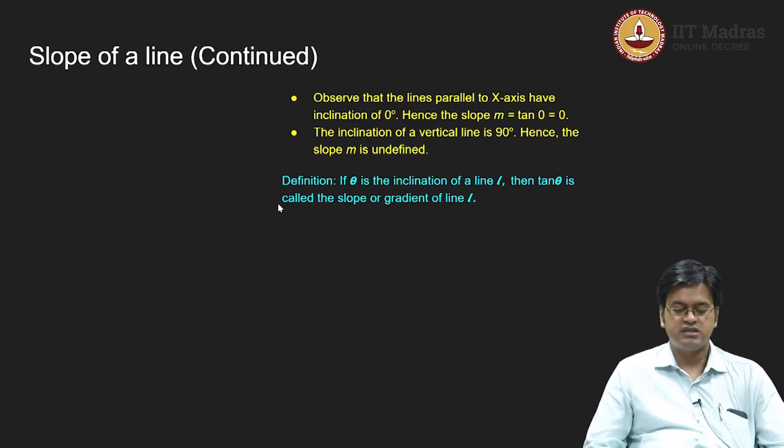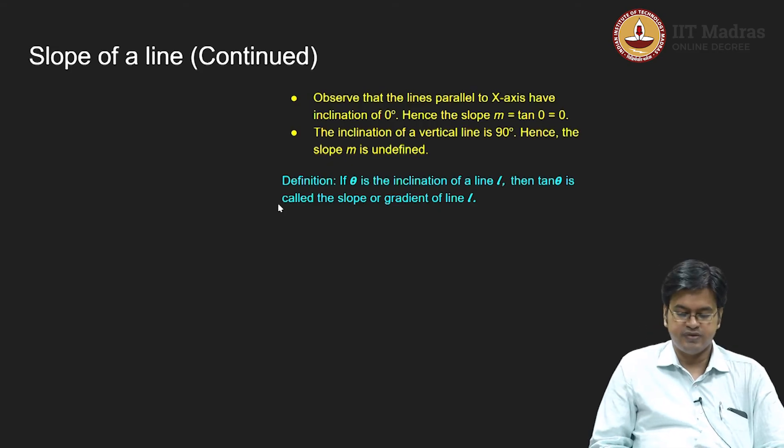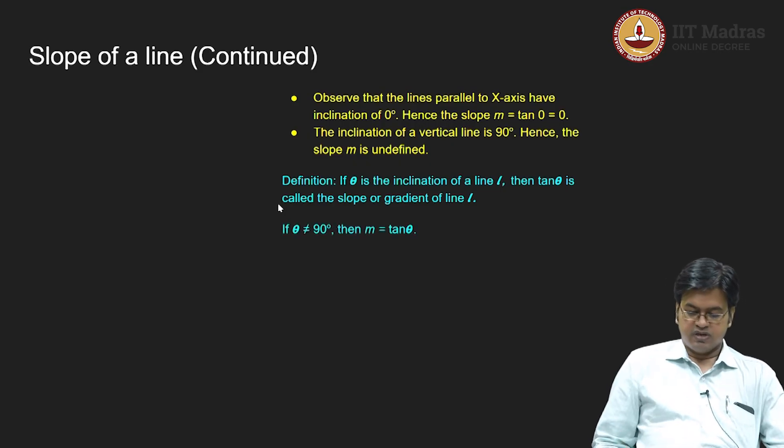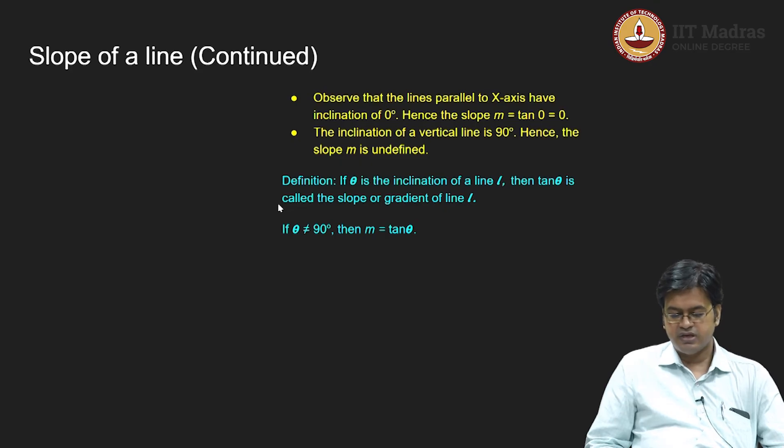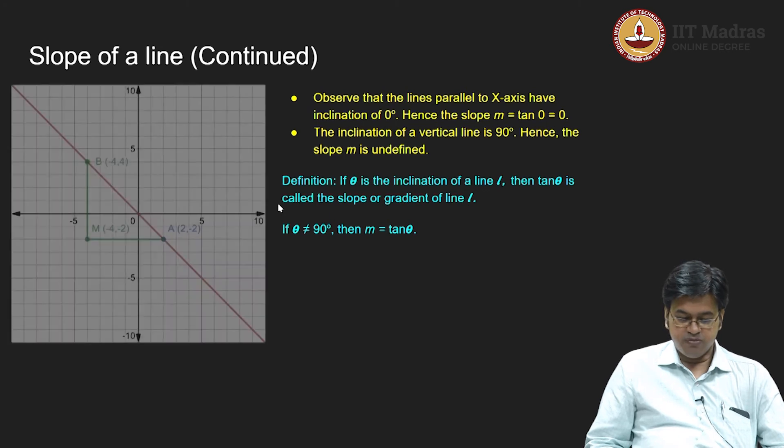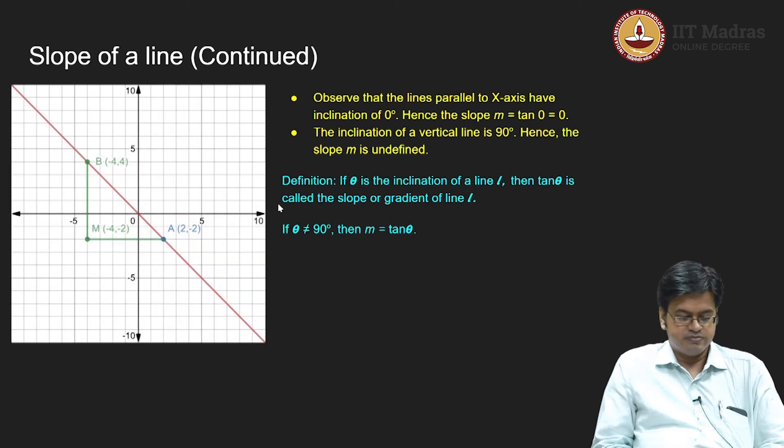So with respect to inclination there is another definition of slope. If theta is the inclination of a line L, then tan theta is called slope or gradient of the line. This is the second definition of our slope of a line which matches exactly with the original definition, but there will be some glitch, there may be some confusion or ambiguity. So let us try to resolve that ambiguity because this theta is the angle made with respect to positive x axis. And theta not equal to 90 degrees, I can define m equal to tan theta, that is perfectly fine and it is well defined whenever it is not equal to 90 degrees. What is the ambiguity? The ambiguity can be shown in the figure.